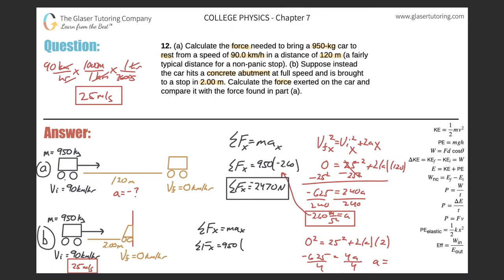This works out to be about negative 156 meters per second squared. Remember that it is negative.